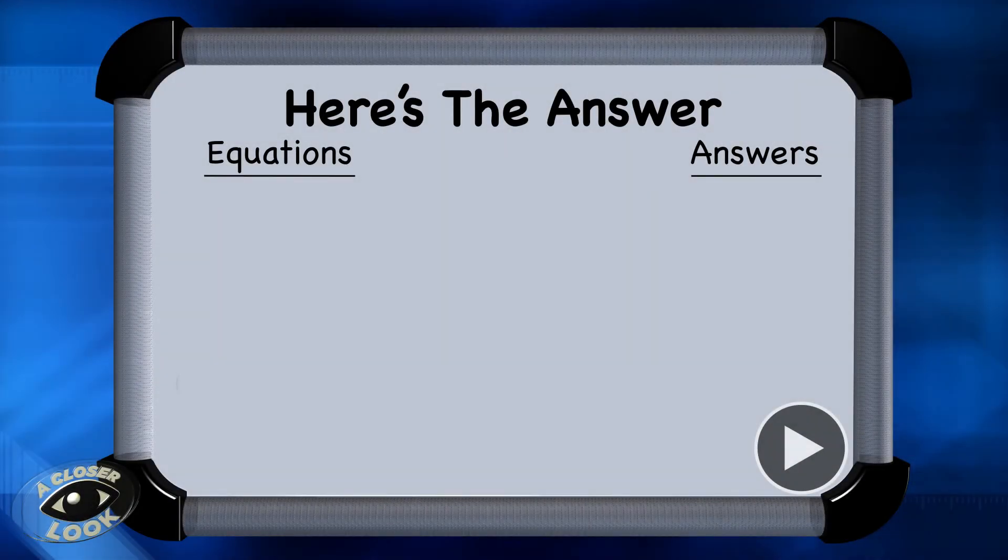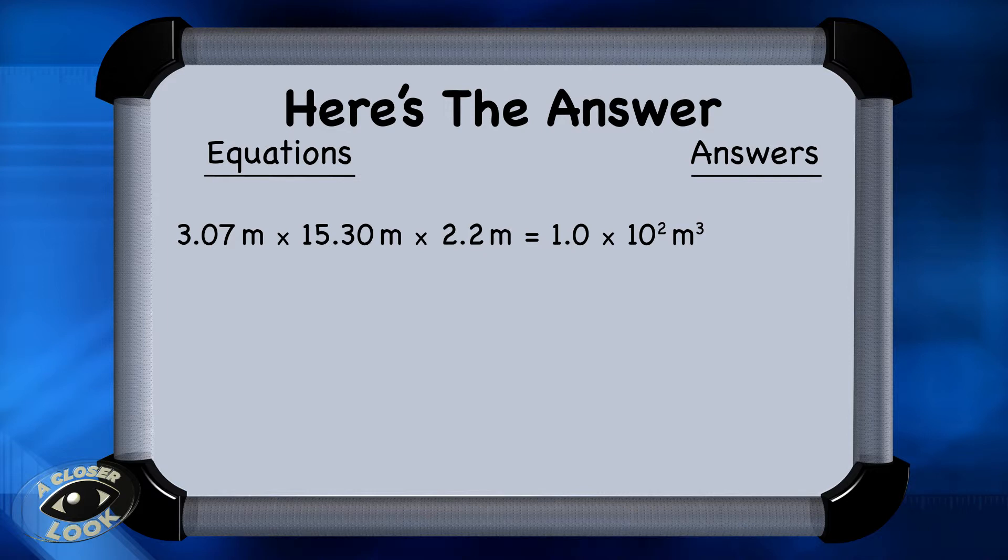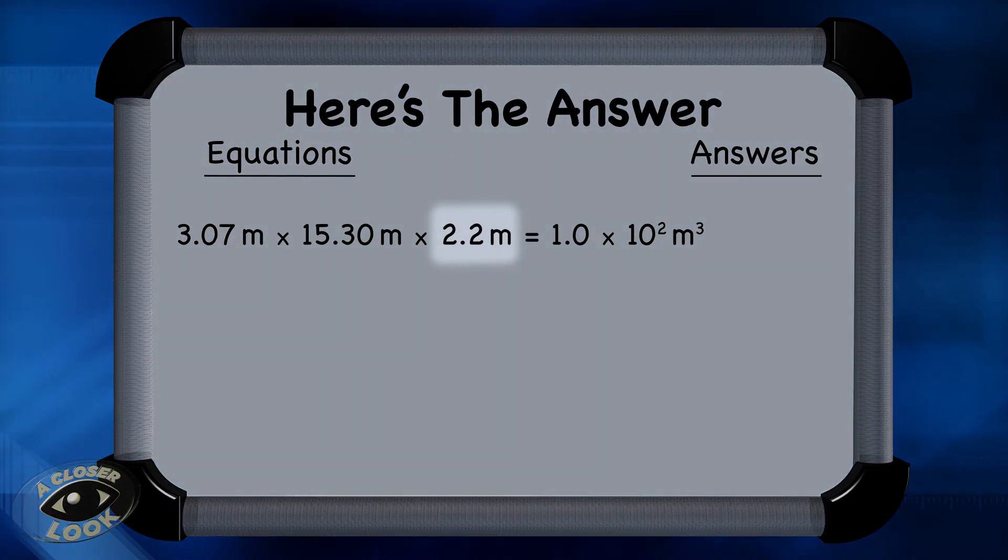Ready to see how you did? The first one, which is a multiplication problem, is 1.0 times 10 to the second meters cubed. When you multiplied 3.07 by 15.30 by 2.2, hopefully you looked at the values to see which one had the smallest number of sig figs. That was 2.2, which has two sig figs, so the answer has to be rounded to two sig figs. If you got that right, that's great.